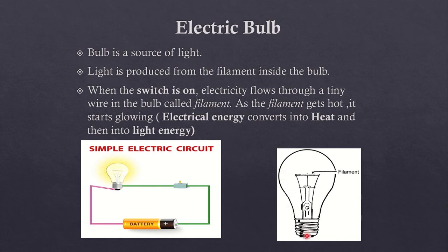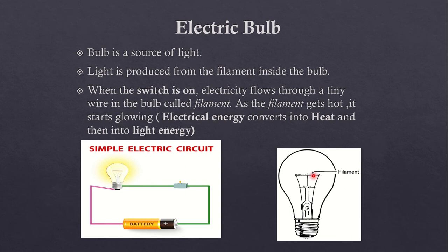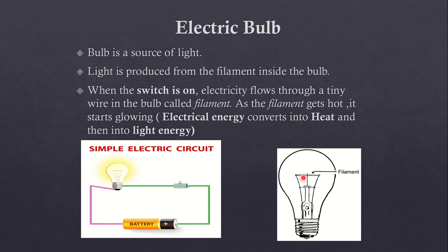Among these two thick wires, there is a thin wire that is spring-like. This wire is known as filament. This thin wire is made up of an element called tungsten. Tungsten is the element from which the filament wire is made. These two thick wires help to attach the filament to the two terminals of the bulb. There are two terminals of the bulb — one is at the bottom of the bulb and one is at the side of the bulb. In this way, the bulb has a filament in which light is produced.